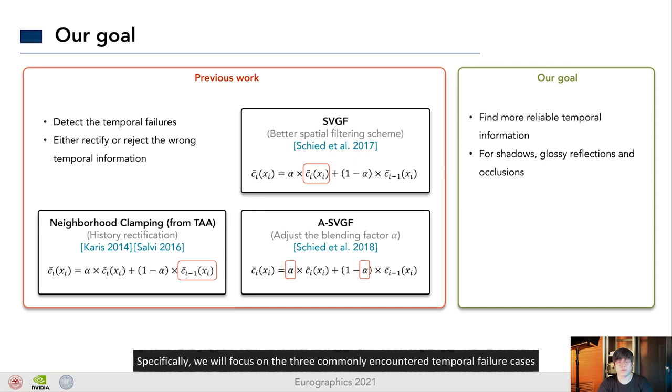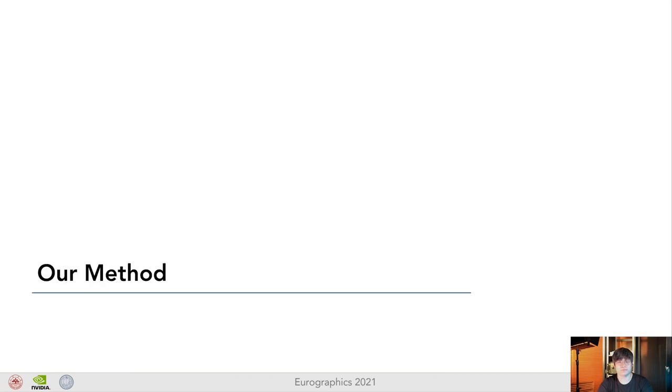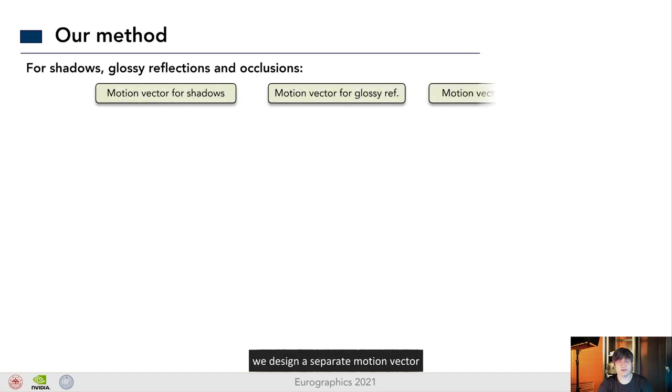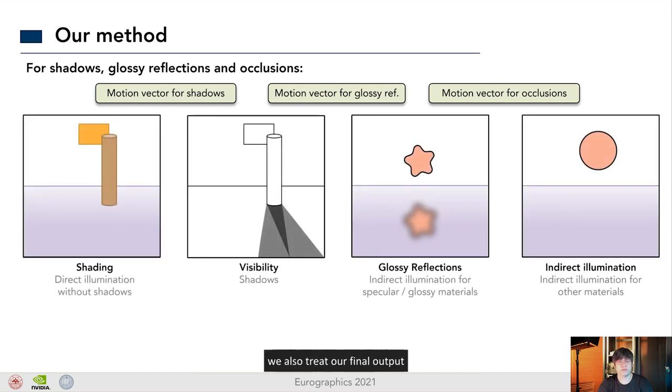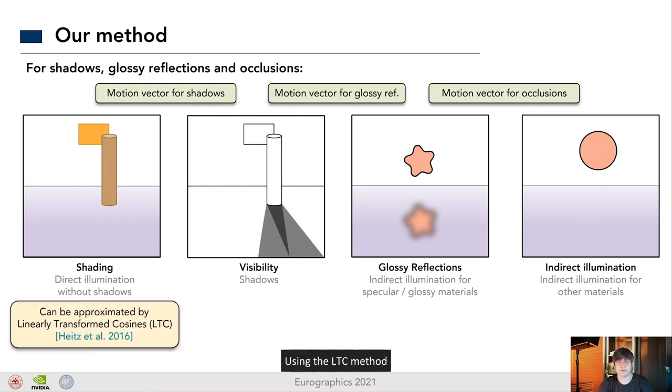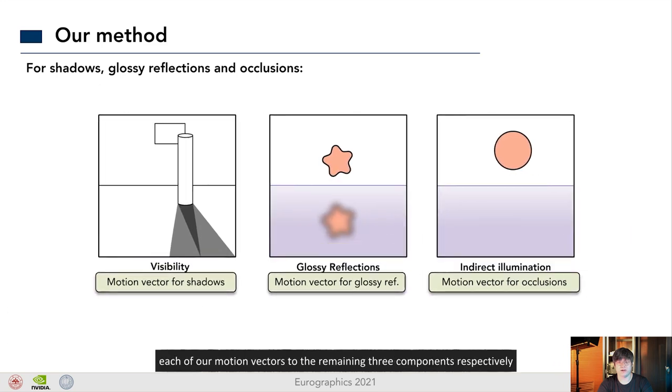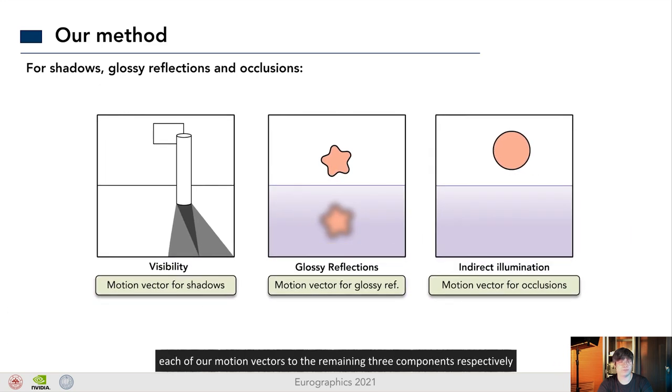In contrast to previous methods, our goal is to find more reliable temporal information. Specifically, we will focus on three commonly encountered temporal failure cases: shadows, glossy reflections, and occlusions. Now, let's take a look at our method. The high-level idea is that we design separate motion vectors for each of these effects. In accordance with the different type of motion vectors, we also treat our final output as a collection of separate components. Using the LTC method, the shading part can already be reasonably approximated in a noise-free way. So now we only need to apply each of our motion vector to the remaining three components respectively.